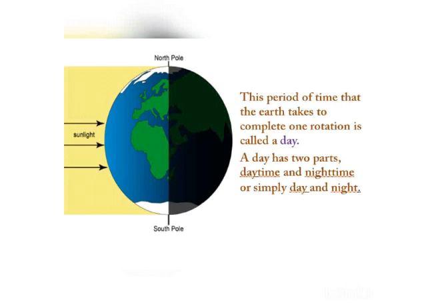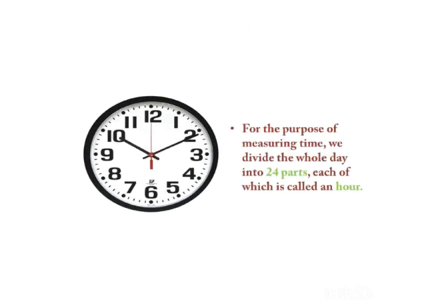This period of time that the Earth takes to complete one rotation is called a day. When the Earth completes one rotation, it's called a day. A day has two parts, as you can see in the diagram: daytime and nighttime, or simply day and night. For the purpose of measuring time, we divide the whole day into 24 parts, each of which is called an hour. That is why we have 24 hours in a day - because a day is divided into 24 parts.